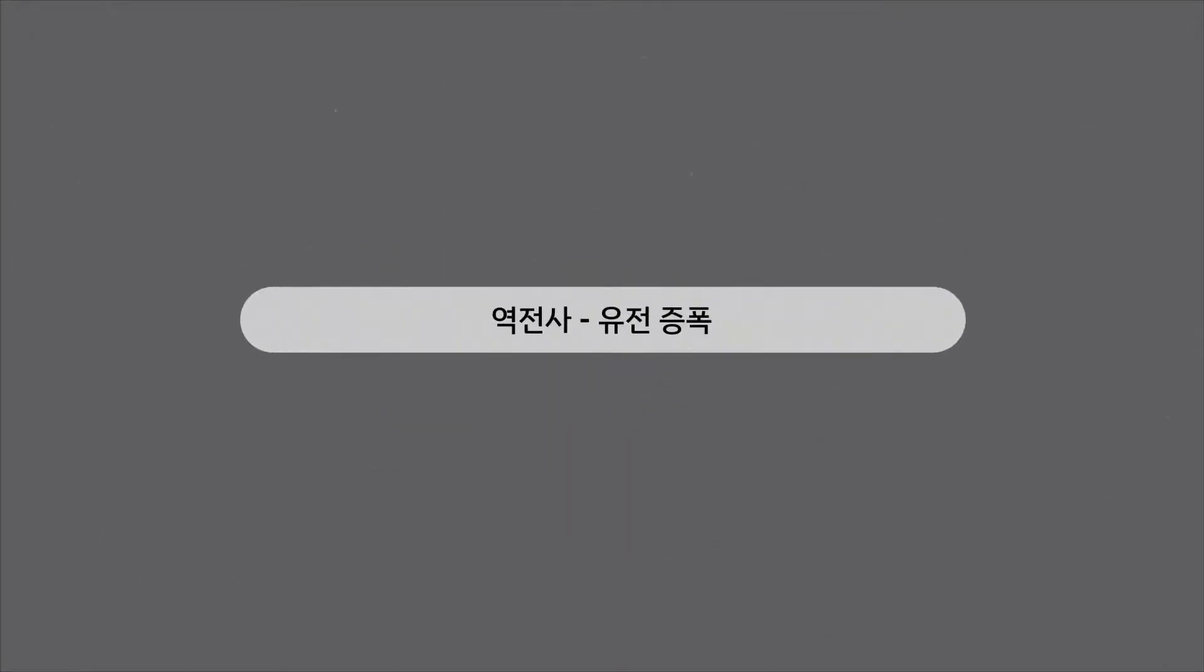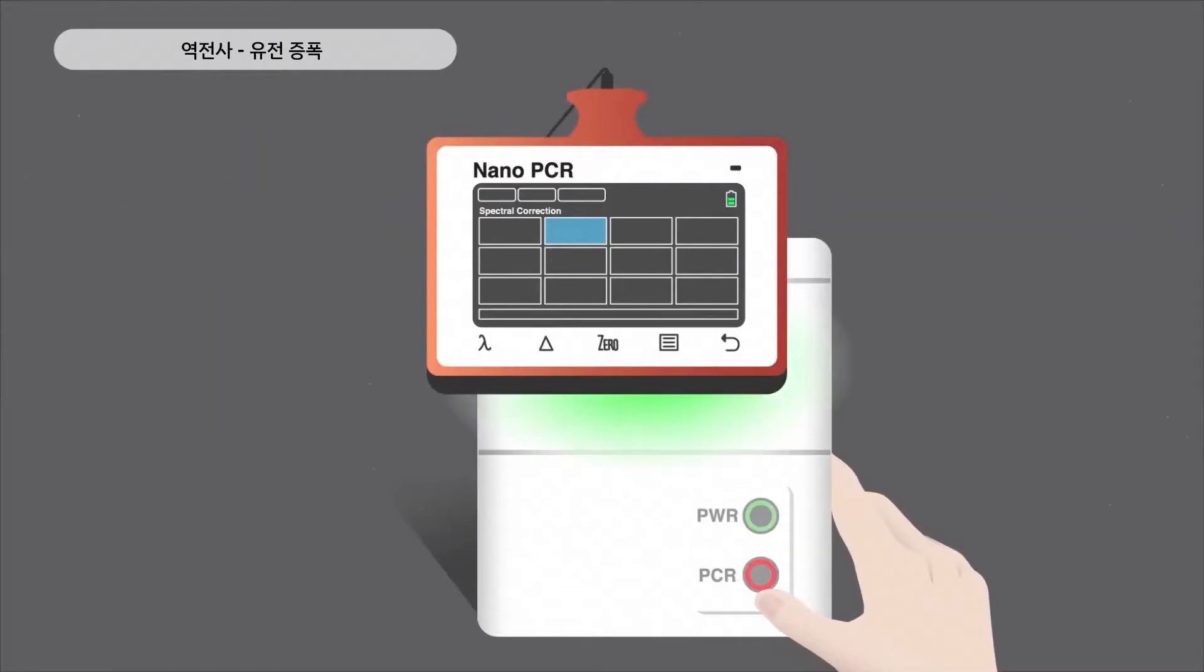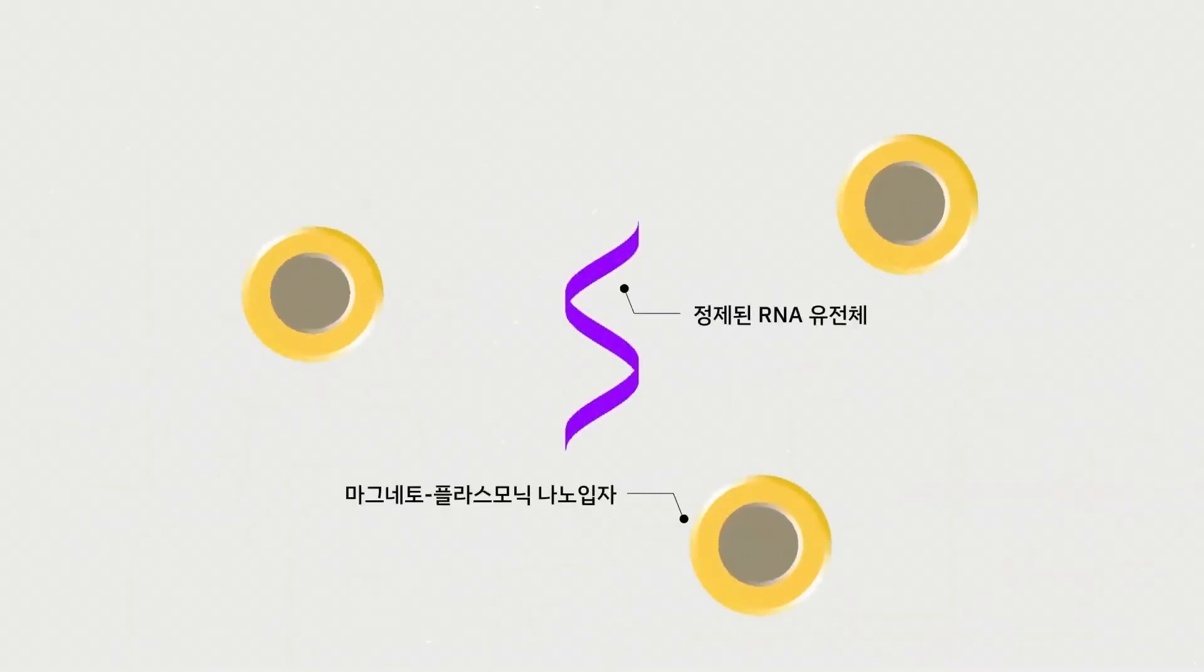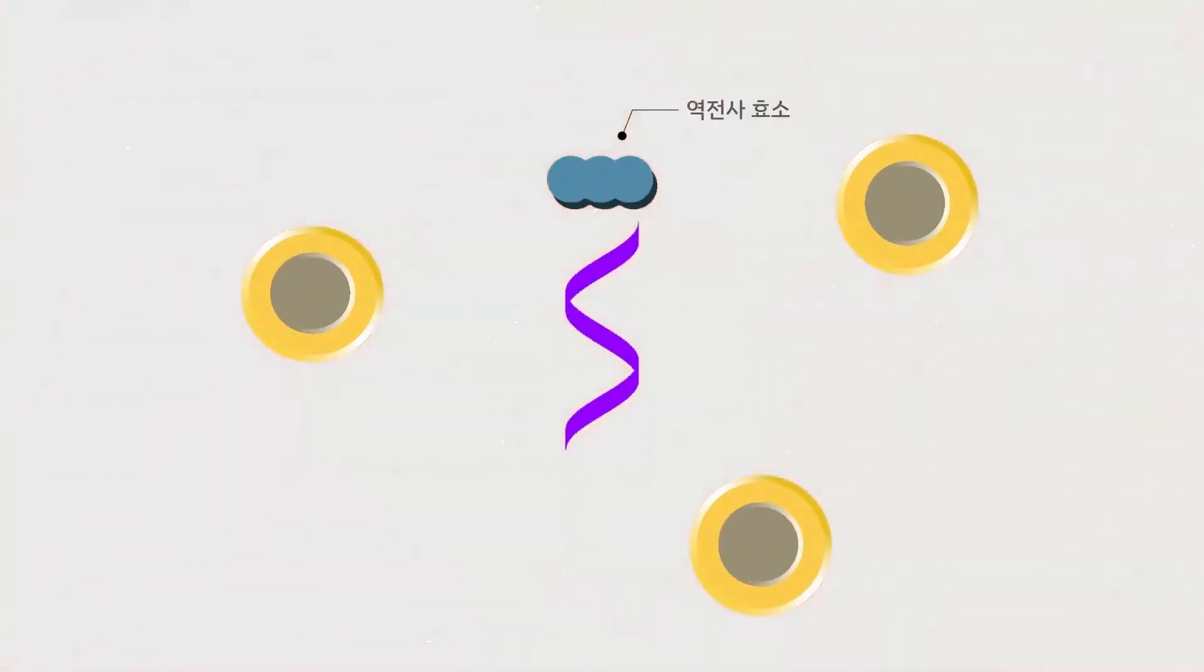The sample is then loaded into the nano-PCR machine which performs RT-PCR. Reverse transcriptase is added to the sample, which converts the viral RNA into DNA. Shining green light onto MPN generates heat, which quickly completes this step within 5 minutes.